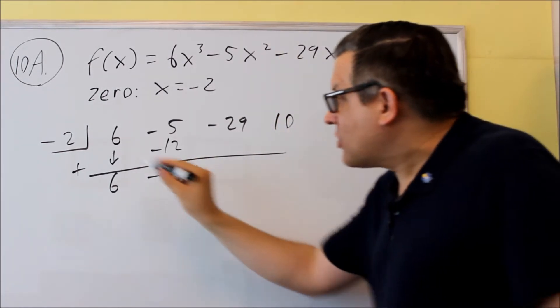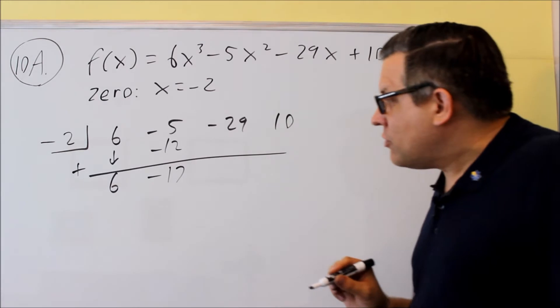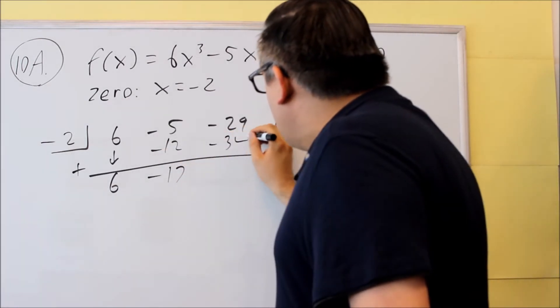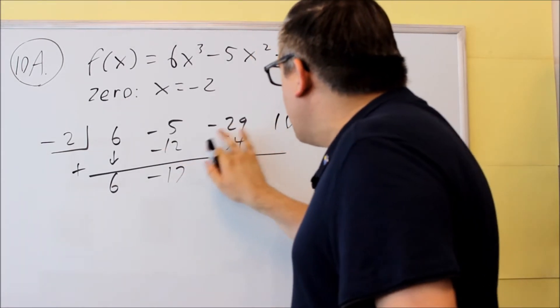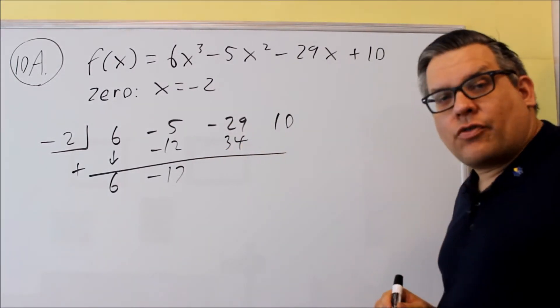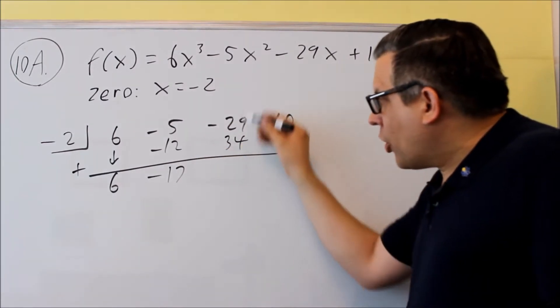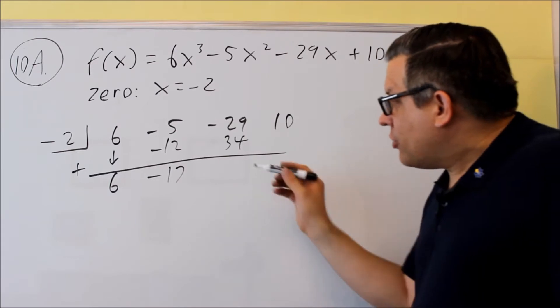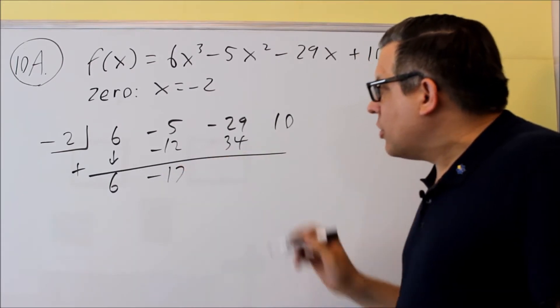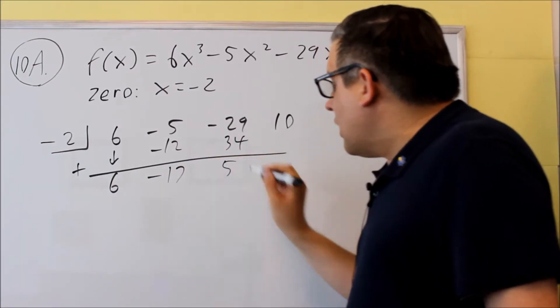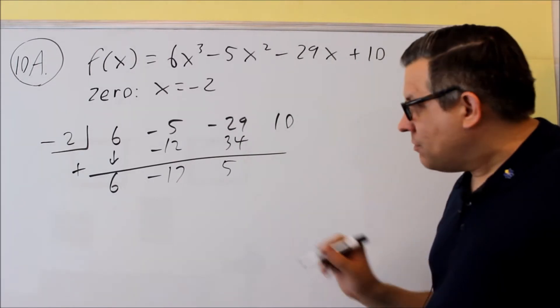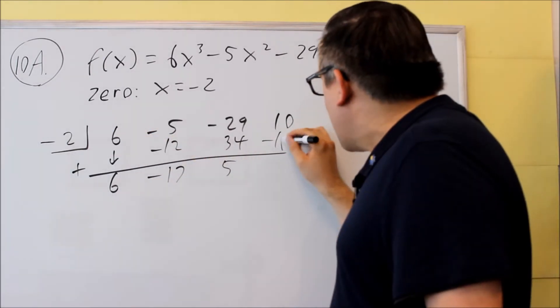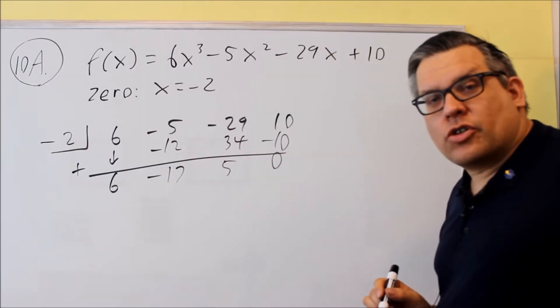Now you're going to multiply negative 17 times negative 2 and you get positive 34. We're going to combine that together. Negative 29 plus 34 means that I get positive 5 times negative 2, which gives me negative 10. I'll get a remainder of 0 when I add those together.